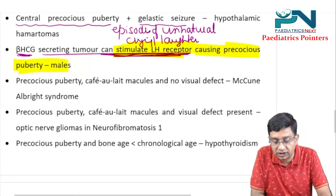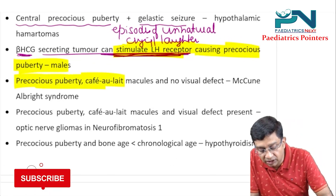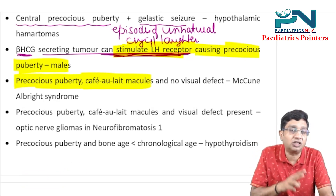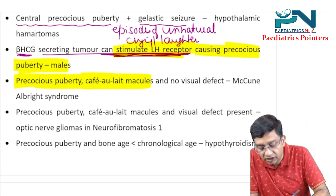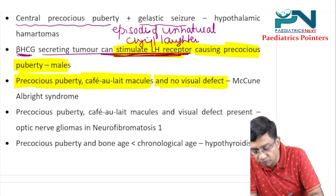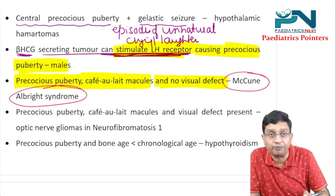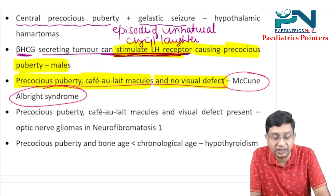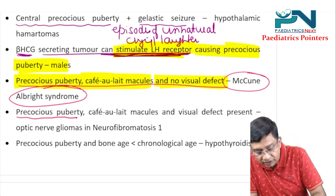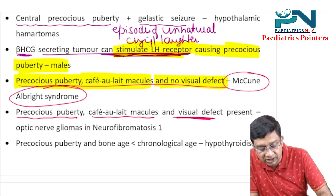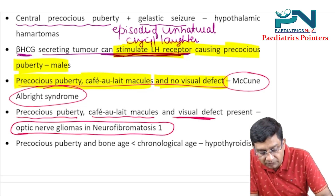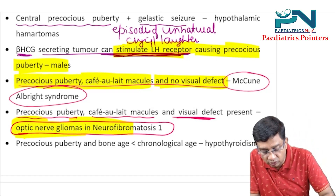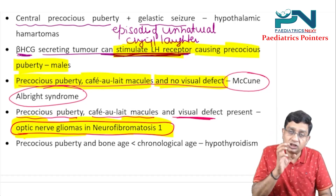If the question mentions precocious puberty and café-au-lait macules, two things should come to mind: McCune-Albright syndrome and optic nerve gliomas in neurofibromatosis type 1. If no visual defect is present, the answer is McCune-Albright syndrome. If a visual defect is present, it is optic nerve gliomas in neurofibromatosis type 1.